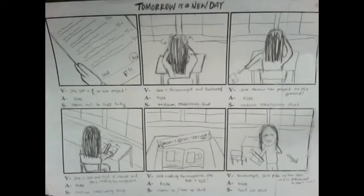Reading from top left to bottom right: Jane gets an F on her project and is really frustrated, so she decides to read a magazine just to get her mind off of things. Within the magazine she finds a note that says 'tomorrow is a new day,' which makes her determined to do better next time.